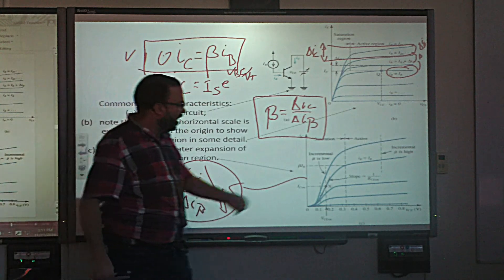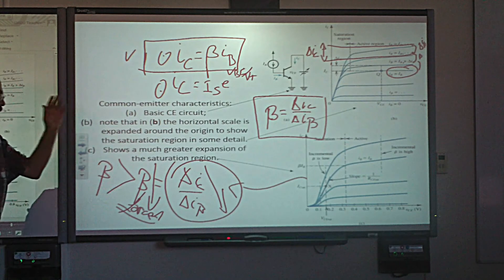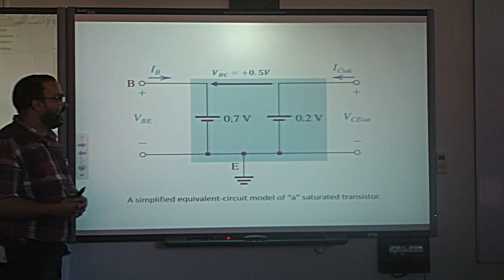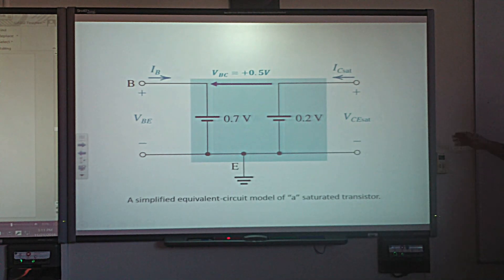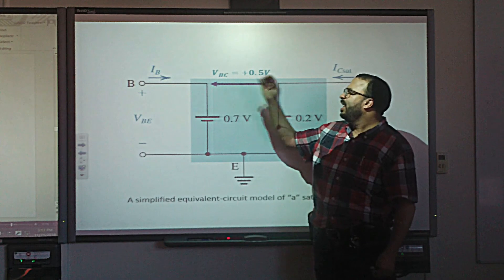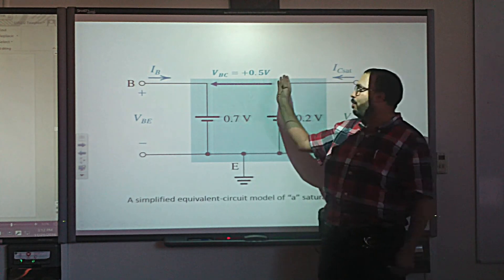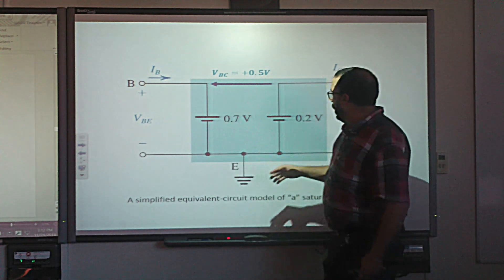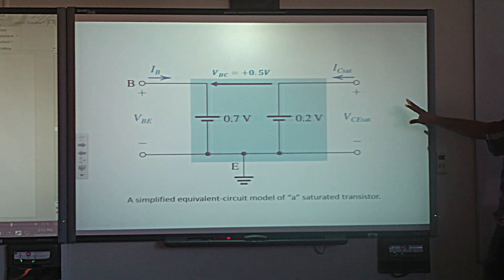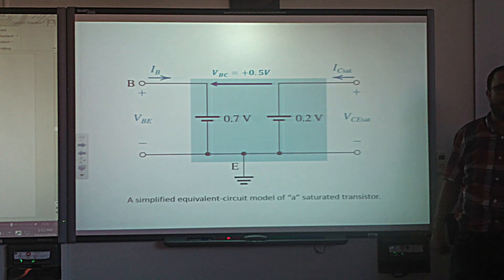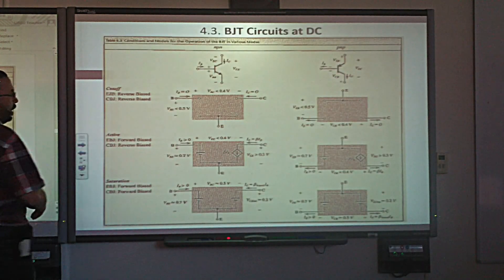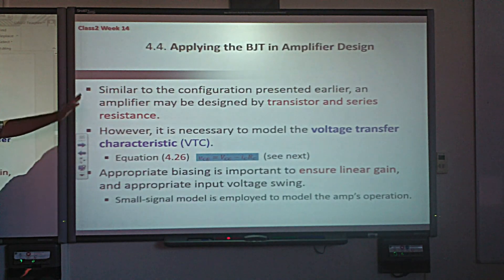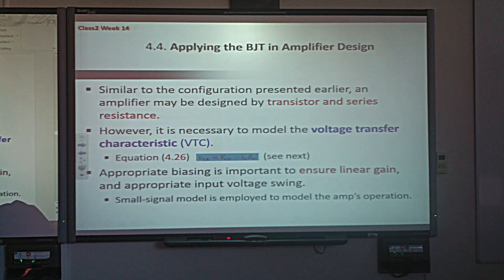To summarize: we have finished explaining beta forced and why it goes down in saturation. The saturation boundary is approximately VBC ≈ 0.5V (VB minus VC, now forward biased) and VCE_sat ≈ 0.2V. We'll revisit these equations and models next class. Next class we'll also finish the quiz and cover the next section. Thank you and see you next class.